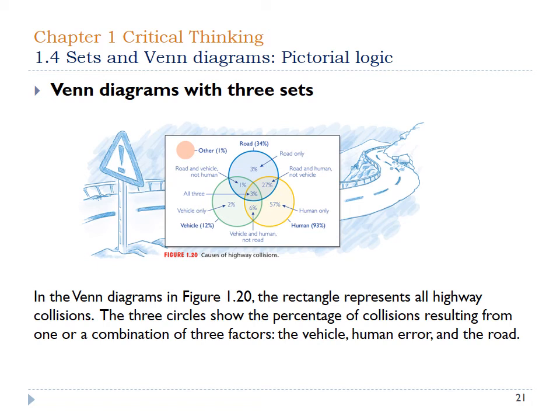You can also have Venn diagrams with three sets of information. It's essentially the same concept, just a little more complicated. You can have four or five circles — they don't have to stop at two or three. However, the more circles you add, the more complex it becomes to show the overlap pieces. In this situation you can see the breakdown with roads, human, and vehicle. Three percent had all three factors, six percent had the bottom two, and one percent had the blue and the green, showing how the different circles overlap.